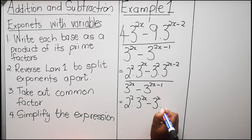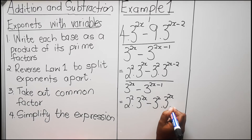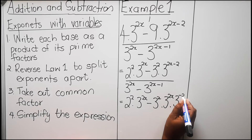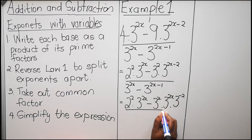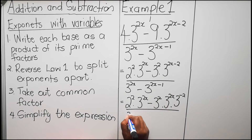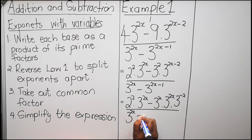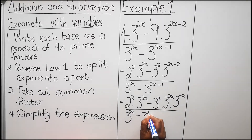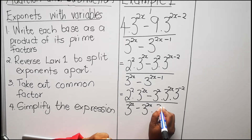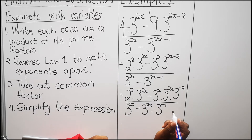Now this one, we are going to have 3 to the power 2x times 3 to the power minus 2. Now we have a single one: 3 to the power 2x minus 3 to the power 2x times 3 to the power minus 1.